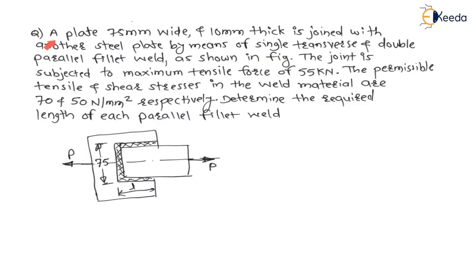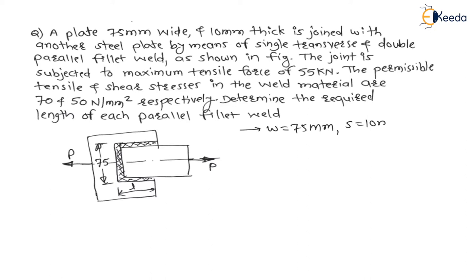The question is: a plate 75 mm wide and 10 mm thickness is joined with another steel plate by means of a single transverse and double parallel fillet weld as shown in the figure. The width of the plate is given as 75 mm and thickness S is given as 10 mm.